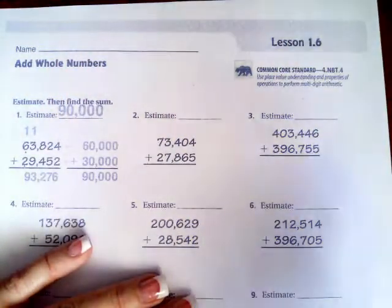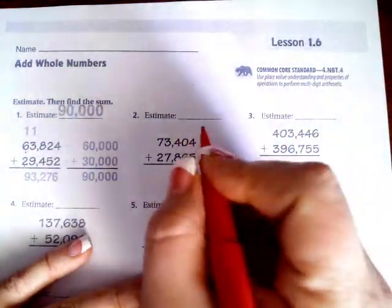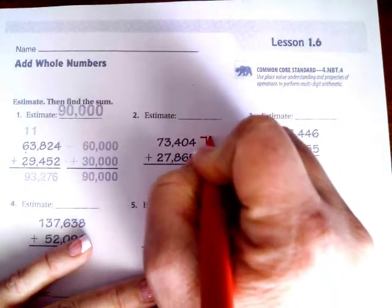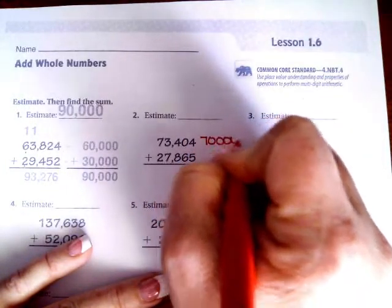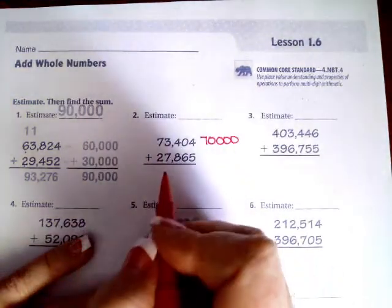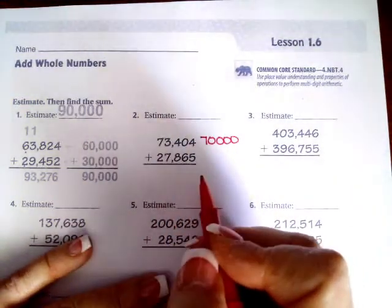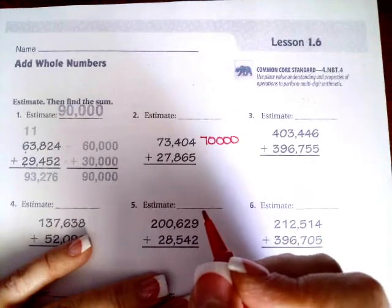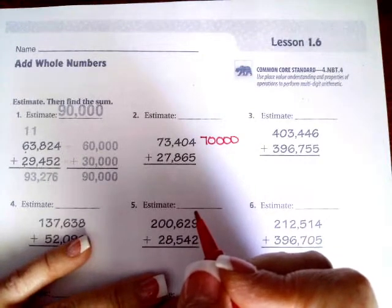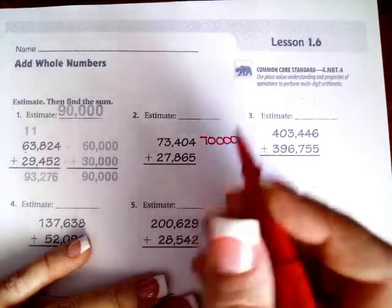Think of when you raise your hand—a five or bigger and the number goes up. All right, so this would be rounded to 70,000. I don't like to put my commas in until the very end of the problem. I tend to mistake them for carried ones or something like that, so I try not to do that.